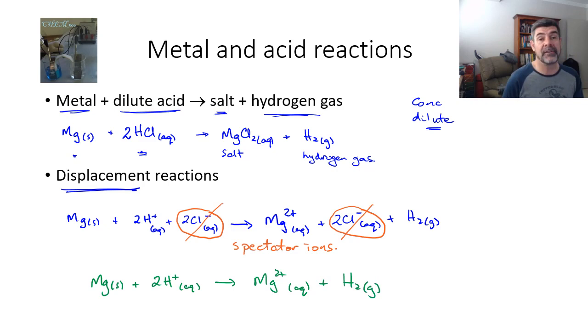This is what's often happening when you look at these types of reactions between metals and acids. The metal is pushing the hydrogen ions out of the solution. And we actually say they are displacing those ions out of the solution and they are released as hydrogen gas.